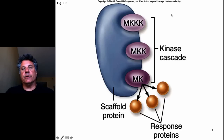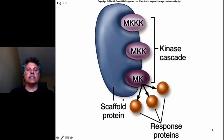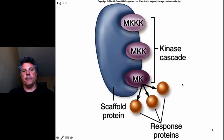It turns out these enzymes are not just floating around loosely in the cytoplasm depending on simple diffusion to bring them together. Rather, they are assembled — often these kinase cascade enzymes are assembled onto a scaffold protein. The scaffolding protein juxtaposes the interacting cascading kinases that will eventually target response proteins, which then diffuse in the cell to elicit appropriate cellular responses.